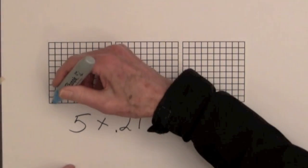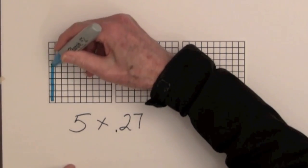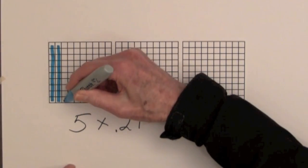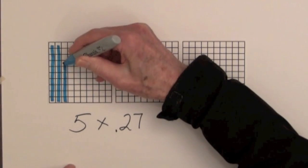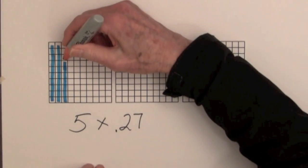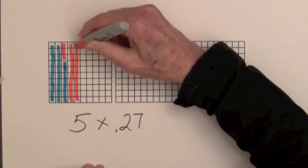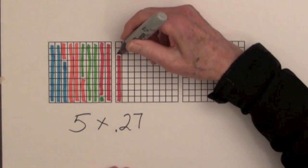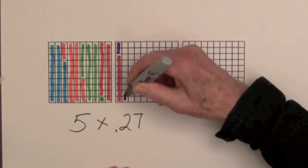So let's shade one of the 27 hundredths. Then shade another 27 hundredths, and finally a fifth of the 27 hundredths.